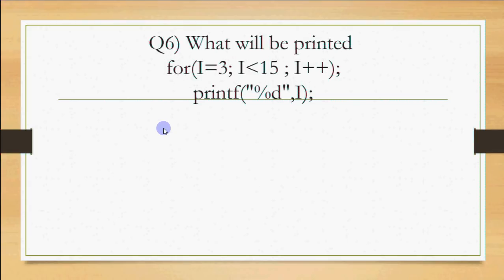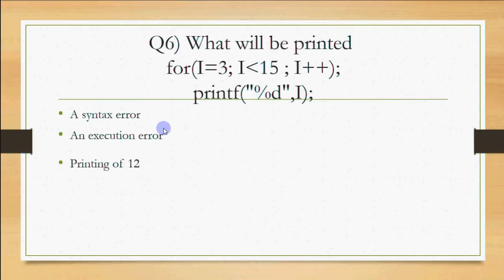Next question: what will be printed? for(i=3; i<15; i++); printf("%d", i). The options are a syntax error, an execution error, 12 printfs, or 15 printfs. Notice the semicolon immediately after the for loop. As per the grammar of C, a semicolon means a null (blank) statement, so the compiler does not flag this as an error.